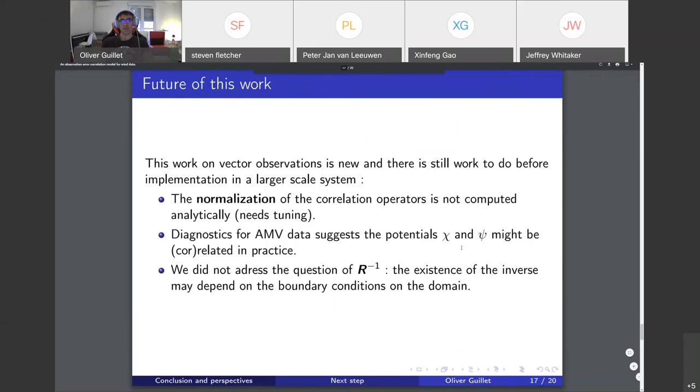Some limits before I finish: the normalization of covariance operators is computed empirically and not analytically here, and it might need some tuning. The method is not perfect. From the paper of Bormann in 2003, maybe phi and psi are supposed to be uncorrelated but they are not in practice. There's a slight tilt in the figures. We did not address the question of R minus one in this study, but maybe we can talk about it. The rest is for discussion.